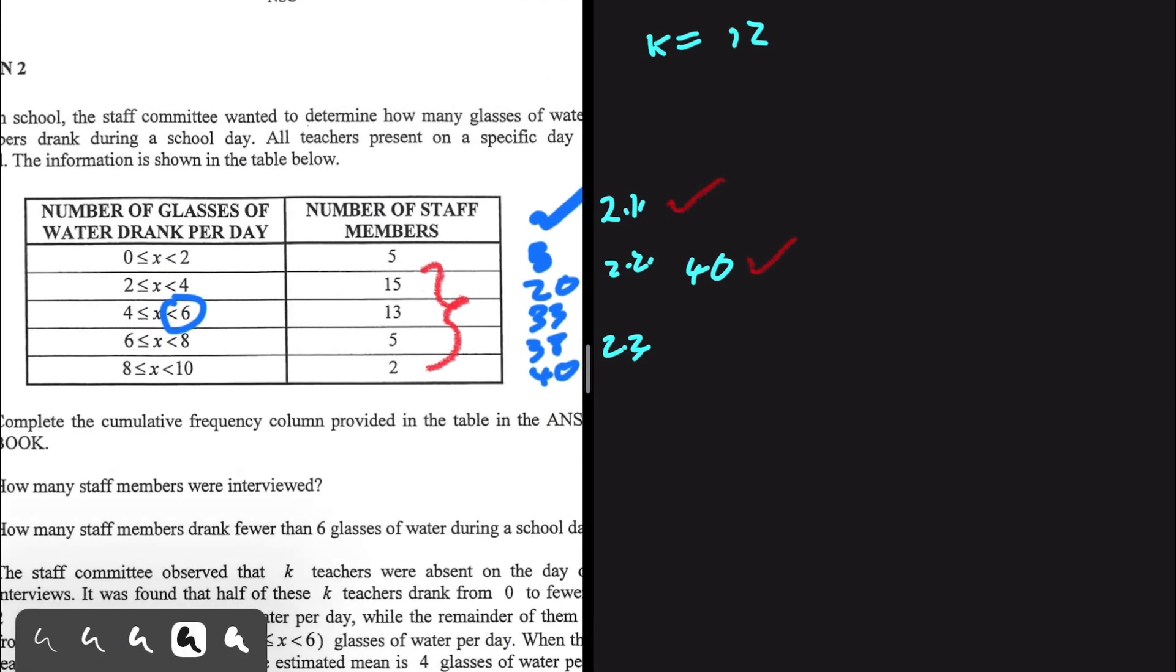So the people who drank fewer than 6 is 13 plus 15 plus 5. Those are the people that drank fewer than 6 glasses of water in a day. So 15 plus 13 is 28, 28 plus 5, so we have 33. 33 people drank less than 6 glasses of water.